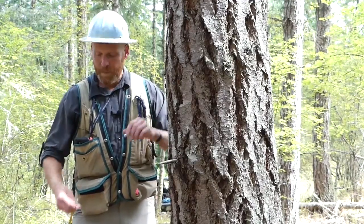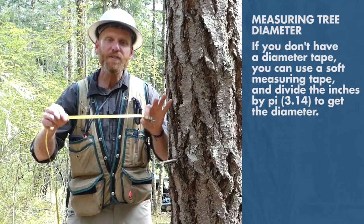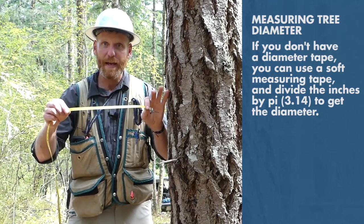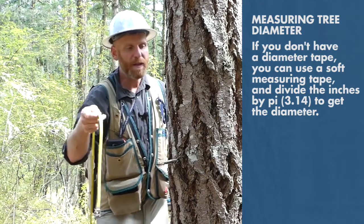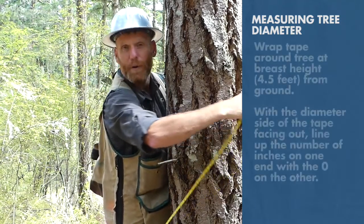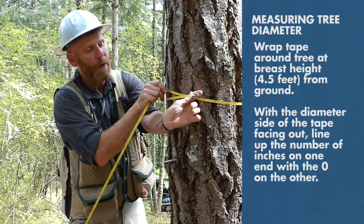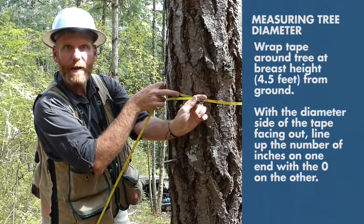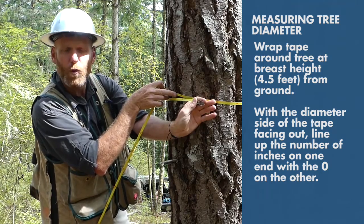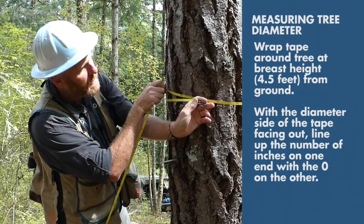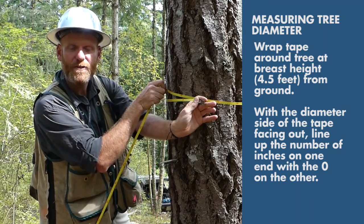When you're using a diameter tape, the tape has two sides to it — one side measures distance and the other side is calibrated to measure diameter, so of course you want to make sure you use the side that's calibrated for diameter. Take the tape and wrap it around the tree at breast height, which is four and a half feet off the ground. Pull the tape the entire way around and then line up the number of inches in diameter with the zero and record the inches. You want to record to the tenth of an inch — in this case, the tree is 17.8 inches in diameter.